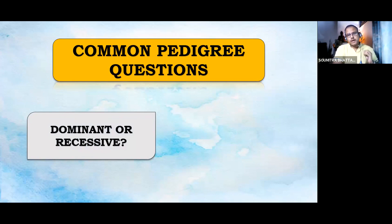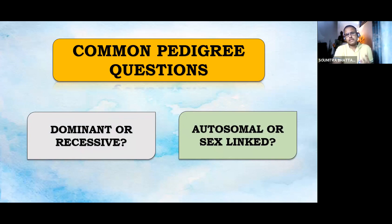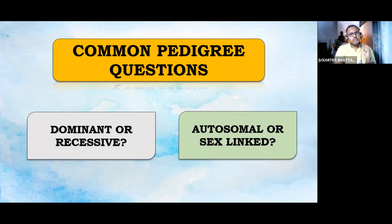They may also ask you whether the pedigree is autosomal or sex-linked. Another common question is to find out the genotype of a particular individual in the pedigree. That can be very easily decided when you are able to analyze whether the pedigree is dominant or recessive, autosomal or sex-linked. Once you determine that, you can easily analyze the genotype of that particular individual.